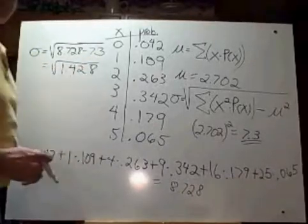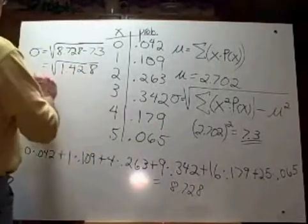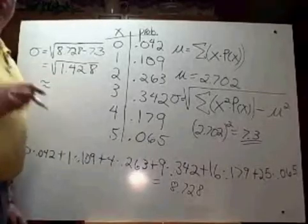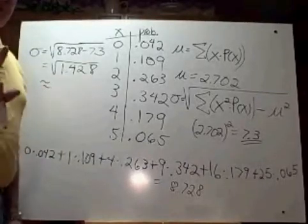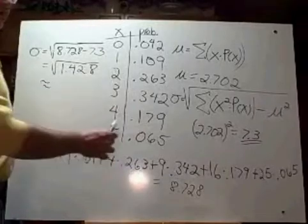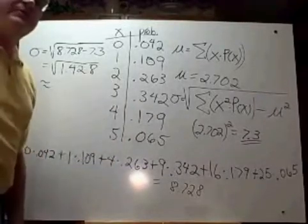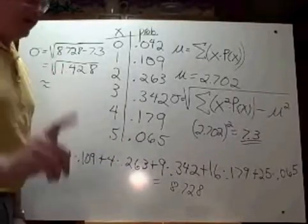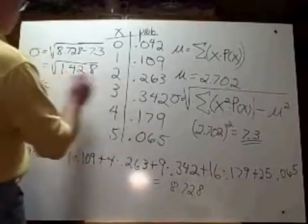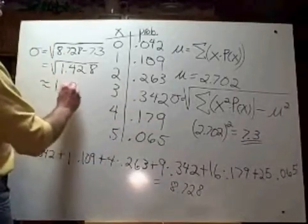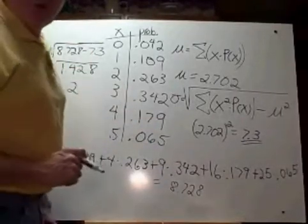And when you take the square root of 1.428, you get approximately, rounding to 1 decimal place, 1 tenth, because these numbers are all whole numbers. The mean and the standard deviation should be accurate to 1 decimal place, or the nearest tenth. This answer is approximately 1.2. Standard deviation is 1.2.